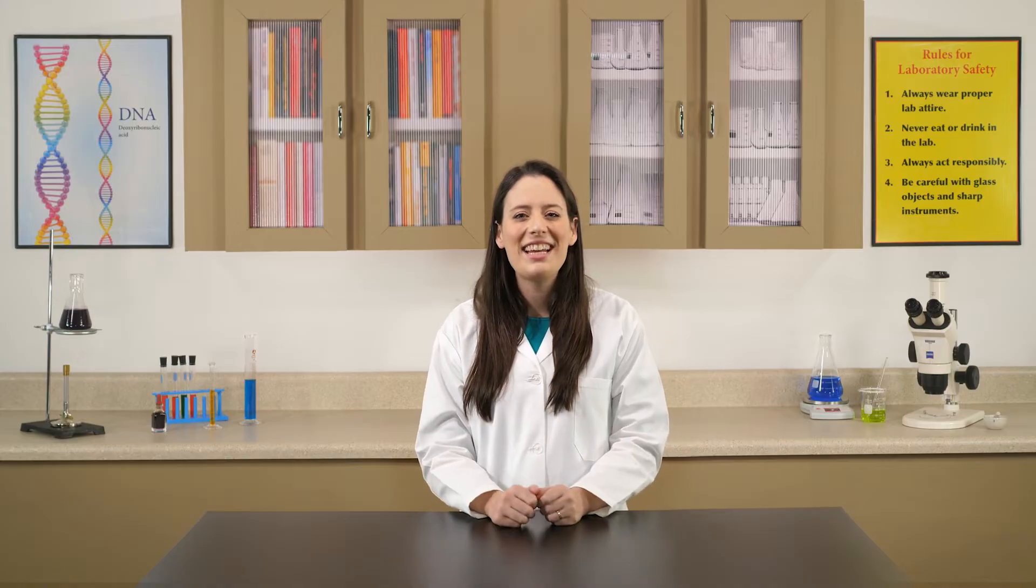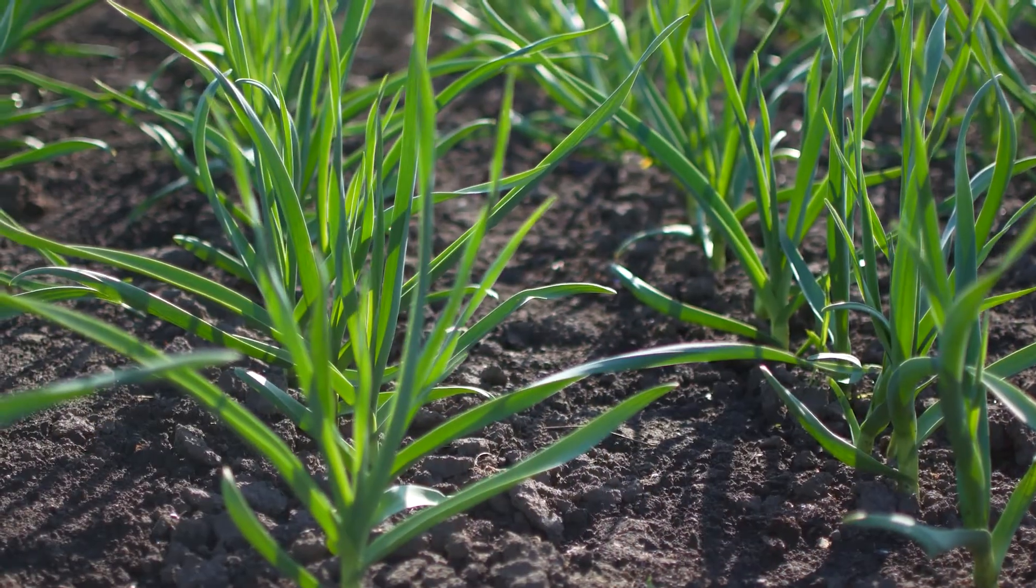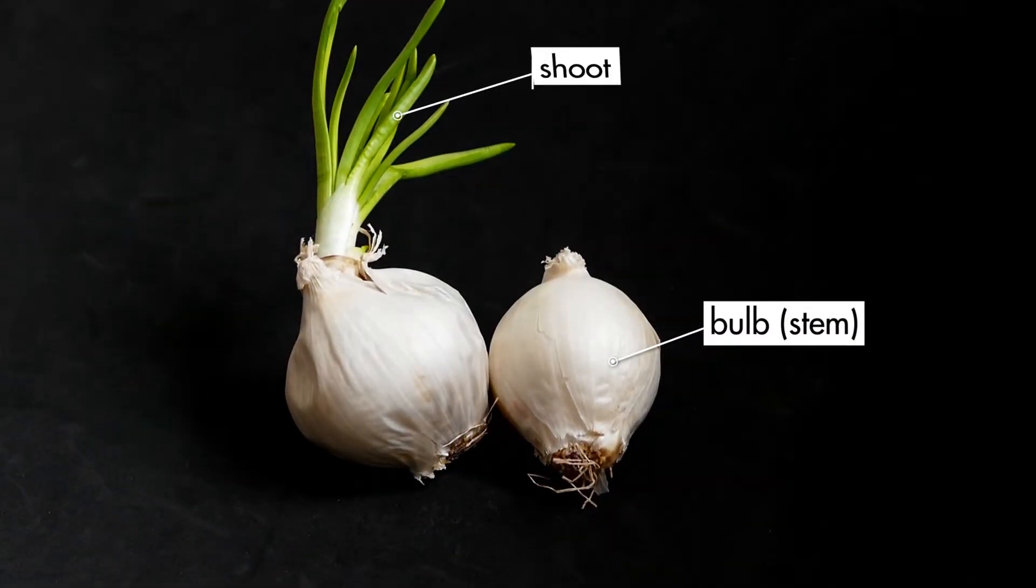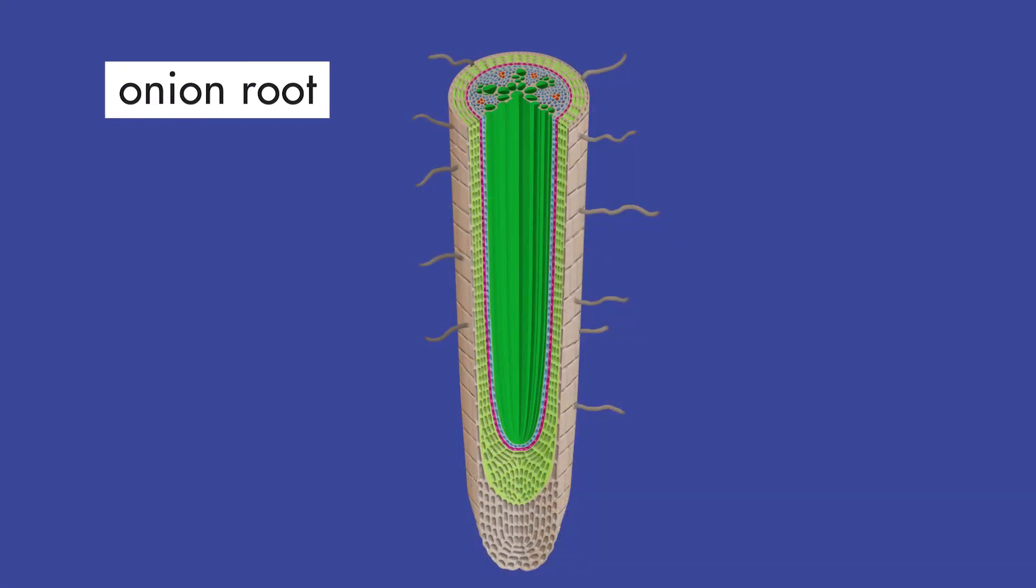In this lab, we will prepare a microscope slide containing a sample of onion cells and examine the cells in each phase of mitosis. The bulb of the onion is a type of stem that grows underground. The region near the tip of an onion root is called the apical meristem. The cells in the apical meristem were actively growing and dividing when the plant was alive, so we should be able to see cells in the various phases of mitosis when the root tip is examined under a microscope.